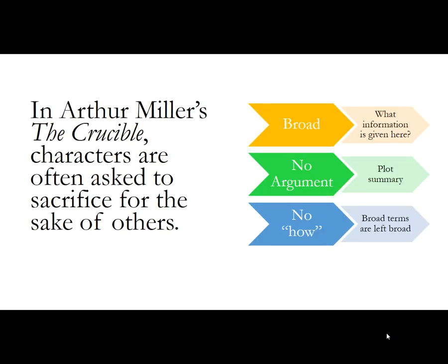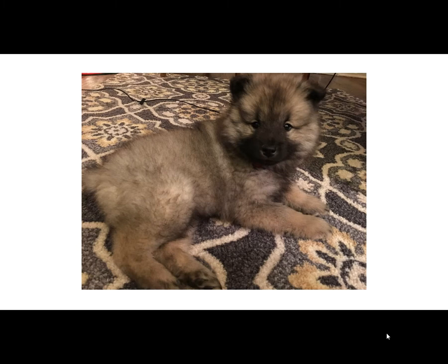Here's the first thesis, and it's a bad one: 'In Arthur Miller's The Crucible, characters are often asked to sacrifice for the sake of others.' Does it tell us what we're going to prove? No. Is there an argument here? No. This is just truth — it's exactly what is true from the story. No one would disagree with this. There's no argument here; it's just plot summary and it's very, very broad. This is like a baby thesis.